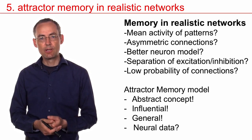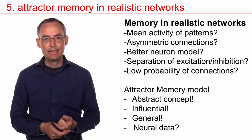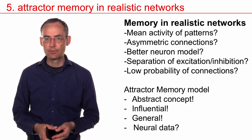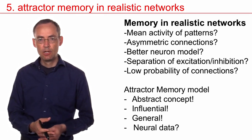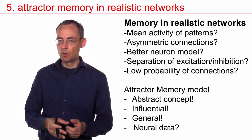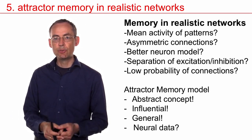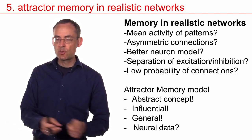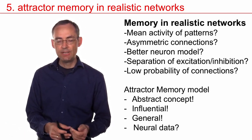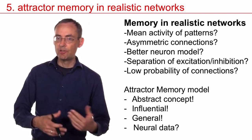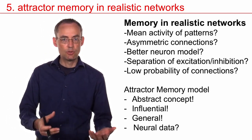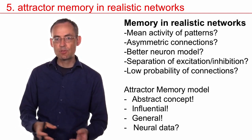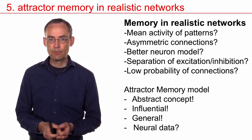The simulations, as well as the theoretical analysis, shows that the concept of attractor memory can be translated into rather realistic networks. Realistic networks here means we can change the mean activity of patterns to make it more plausible, very low activity. Only a small fraction of neurons is active at the same time. We can go from symmetric connections to asymmetric connections. That's not a problem. We can use a better neuron model, for example, an integrate-and-fire model, but we could also use a Hodgkin-Huxley neuron model. We can separate excitation and inhibition in different types of neurons. We can work with a low probability of connections. There's a big way towards biology that has been taken.